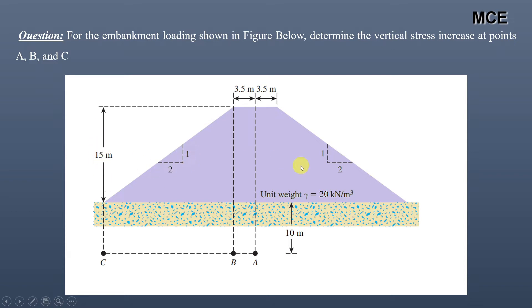and a side slope of 1:2 on both sides. The depth at which we have to find the vertical stress increase is 10 meters. We have to find the stress increase at three points: A, B, and C.